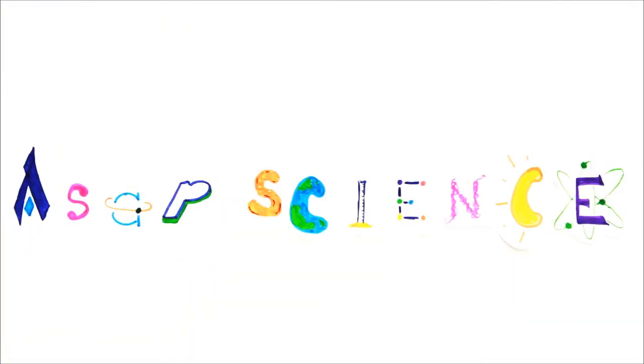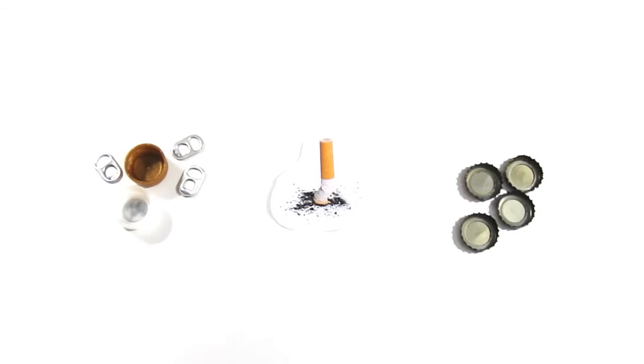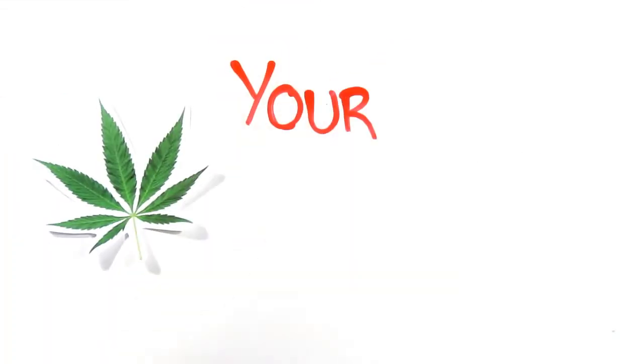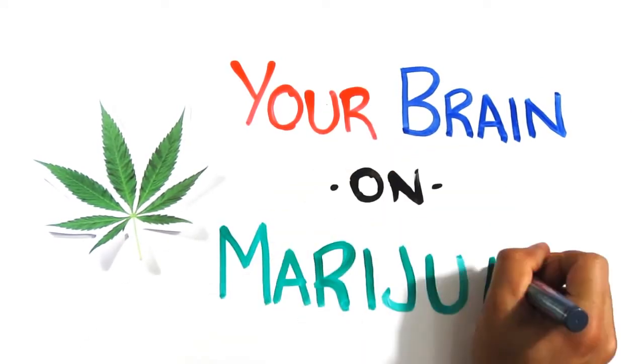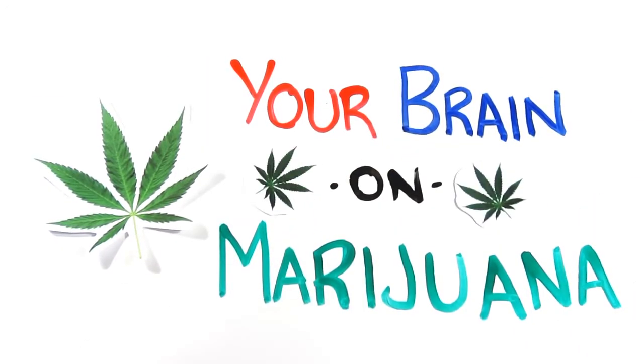For centuries, humans have been using substances to alter their state of mind, from caffeine, cigarettes and alcohol, to more extreme drugs. But as the most commonly used illicit drug in North America, where does marijuana fit in, and how exactly does it affect your brain?